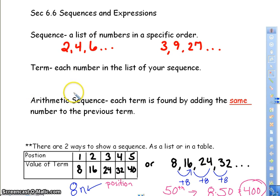A term is each number in the list of your sequence. So my terms here are 2, 4, 6. So if you're trying to find the 5th term, you would go out 2 more numbers. My 4th term would be 8, my 5th term would be 10. The term is actually each individual number. So when they ask you to find the 3rd term, or the next 3 terms, you're talking about the next 3 numbers.